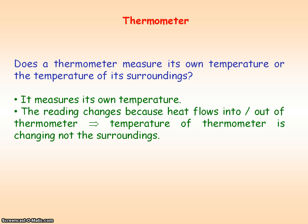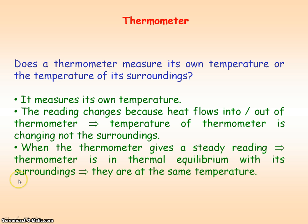If the surroundings is hotter, then heat will flow into the thermometer and its reading will increase. It's only when the thermometer gives a steady reading that we can say the thermometer is in thermal equilibrium with the surroundings, and so the thermometer and the surroundings are at the same temperature. Hence we get a measurement of the temperature of the surroundings.